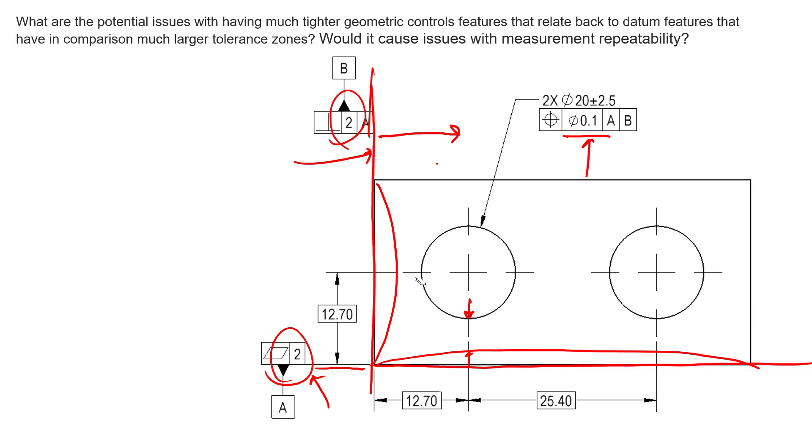And what you would do is you would assess what we call the outer boundary of this feature, basically how large can that hole get and how much position deviation can it have. So if it's really large in diameter and it deviates down into the left, or maybe deviates straight down, it creates this boundary. And we can assess that by adding the least material condition and adding the geometric tolerance. So we would have 20 plus 2.5, plus the 0.1, and we would see that we have an outer boundary of 22.6 millimeters.